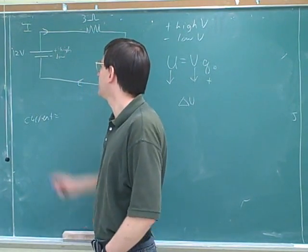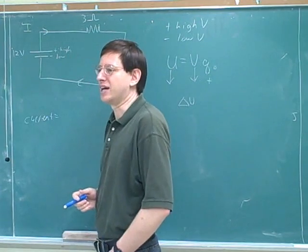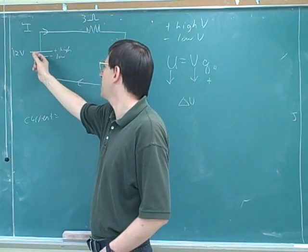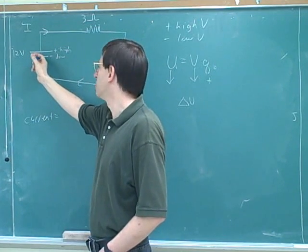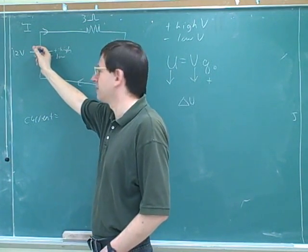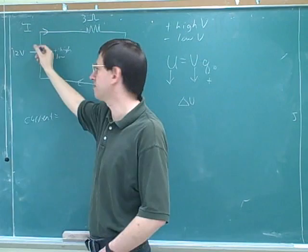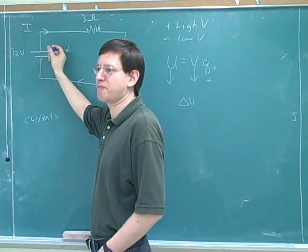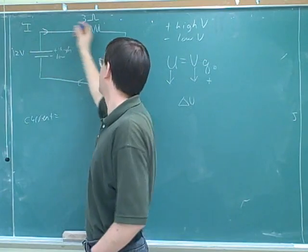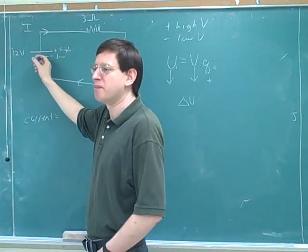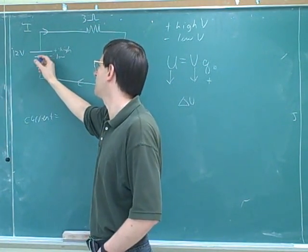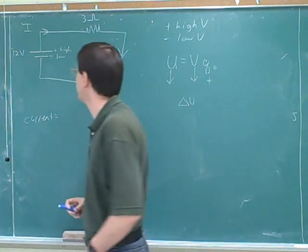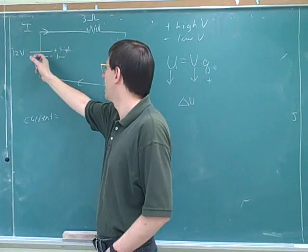An analogy I like here is the ski lift analogy. We could think about this point here being the bottom of a mountain or the bottom of a ski lift, and this point being the top of the mountain or the top of the ski lift. The purpose of the ski lift is to pull the skiers from the low point to the high point, and then they just automatically ski back down to the bottom. But in order for the cycle to continue, the ski lift has to move them back up to the high point again.